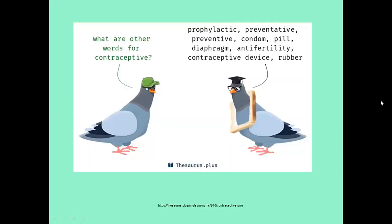There are lots of words for a contraceptive that have changed over time: prophylactic, preventative, condom, pill, diaphragm, anti-fertility, contraceptive device, and rubber. A condom very often used to be called a rubber.